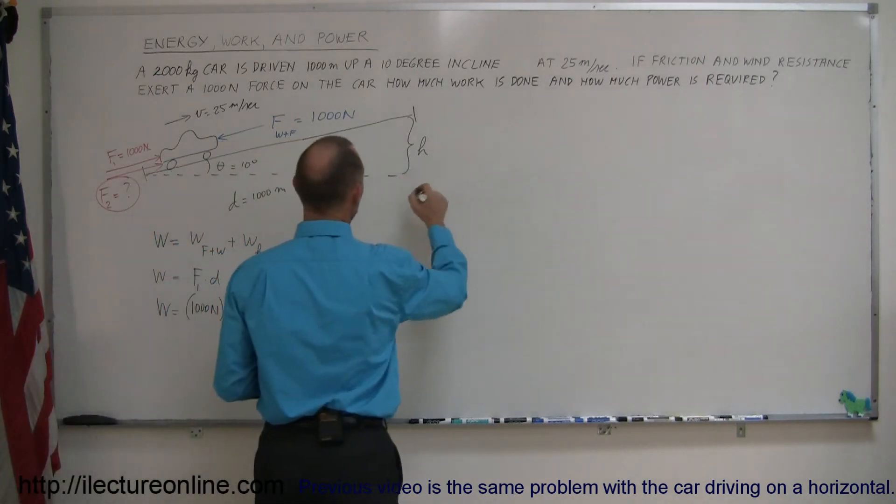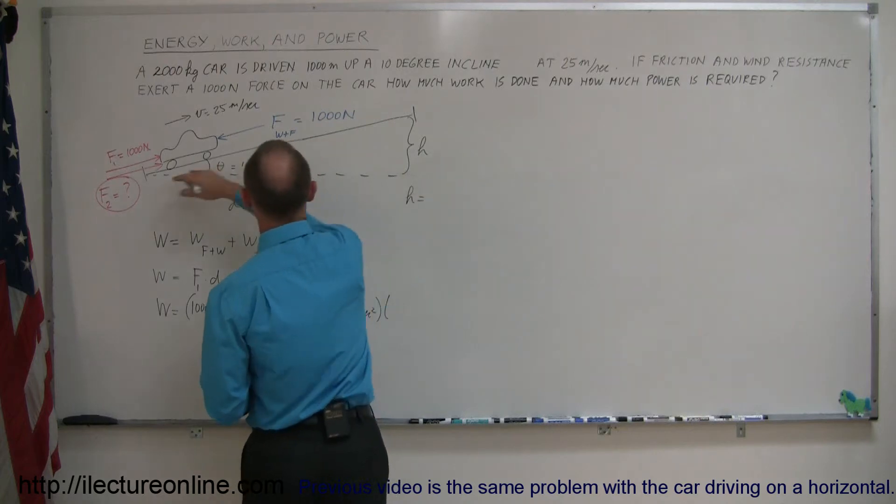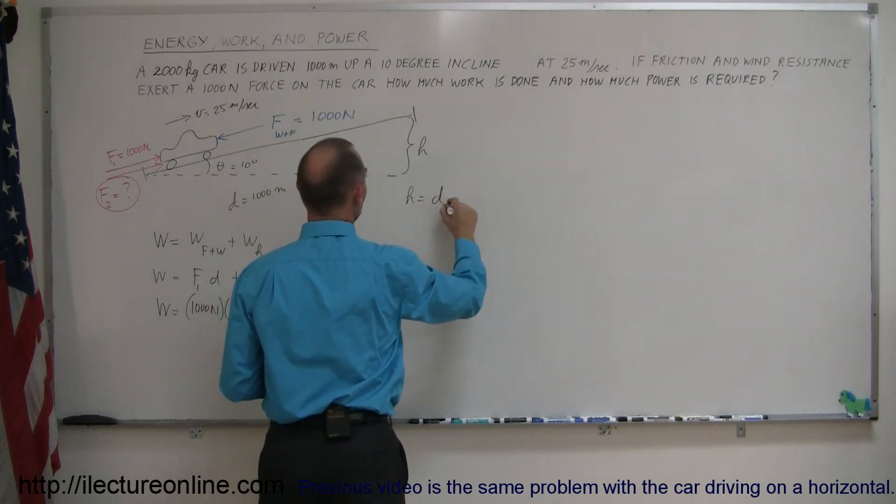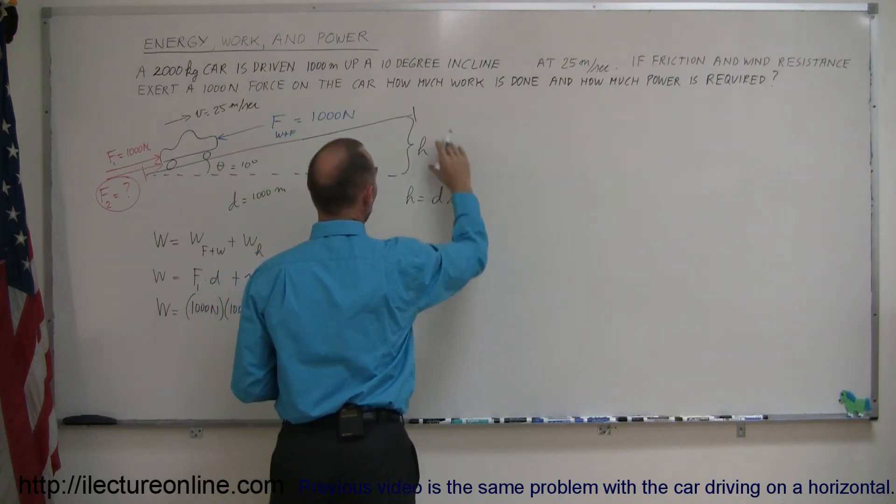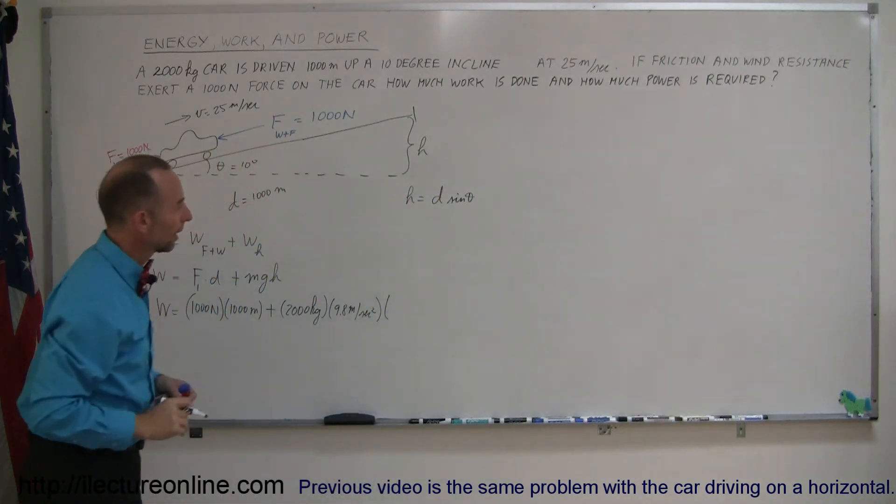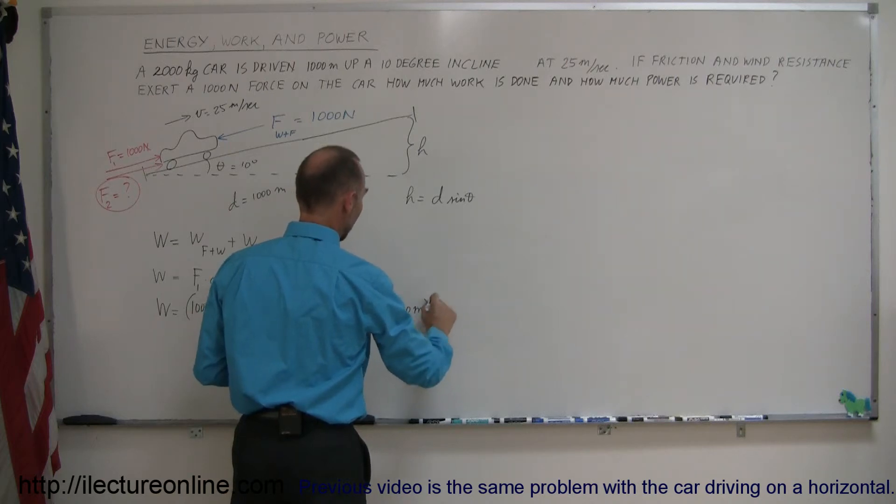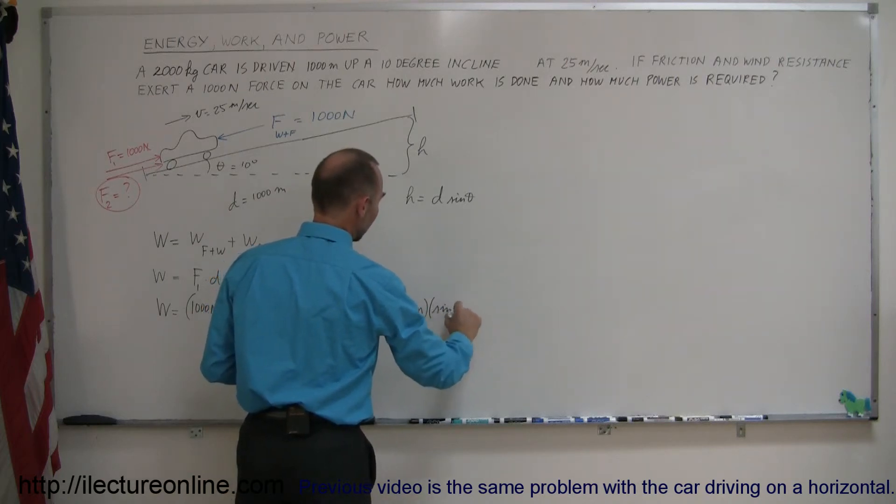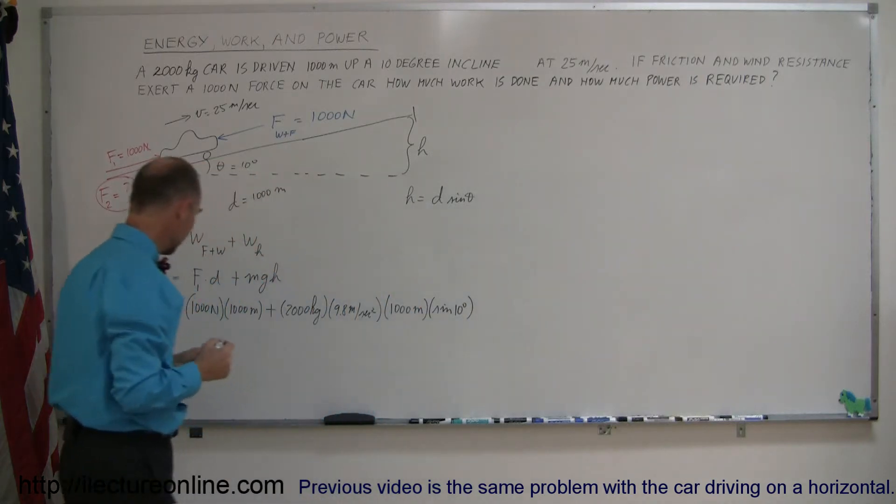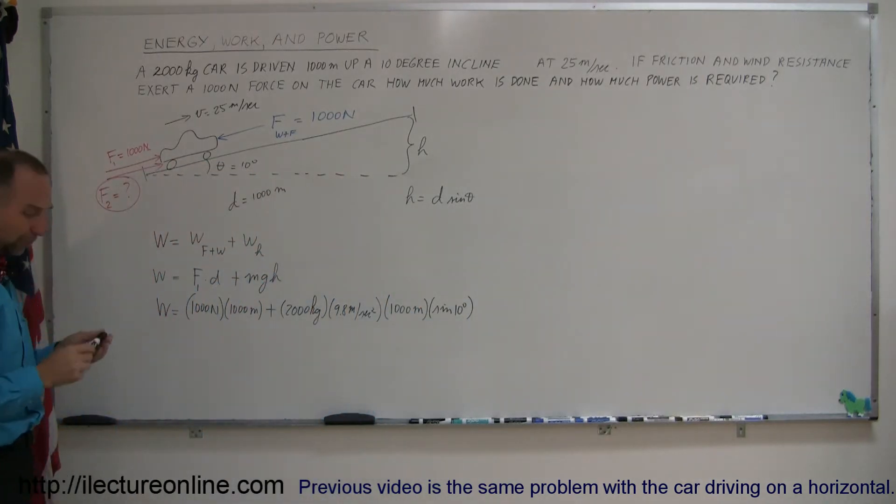The height, H, is equal to the hypotenuse D times the sine of theta because it's the opposite side to the angle, and that becomes H is D sine theta, so D is 1,000 meters and the sine of 10 degrees. All right, that's the total work done in this particular case.